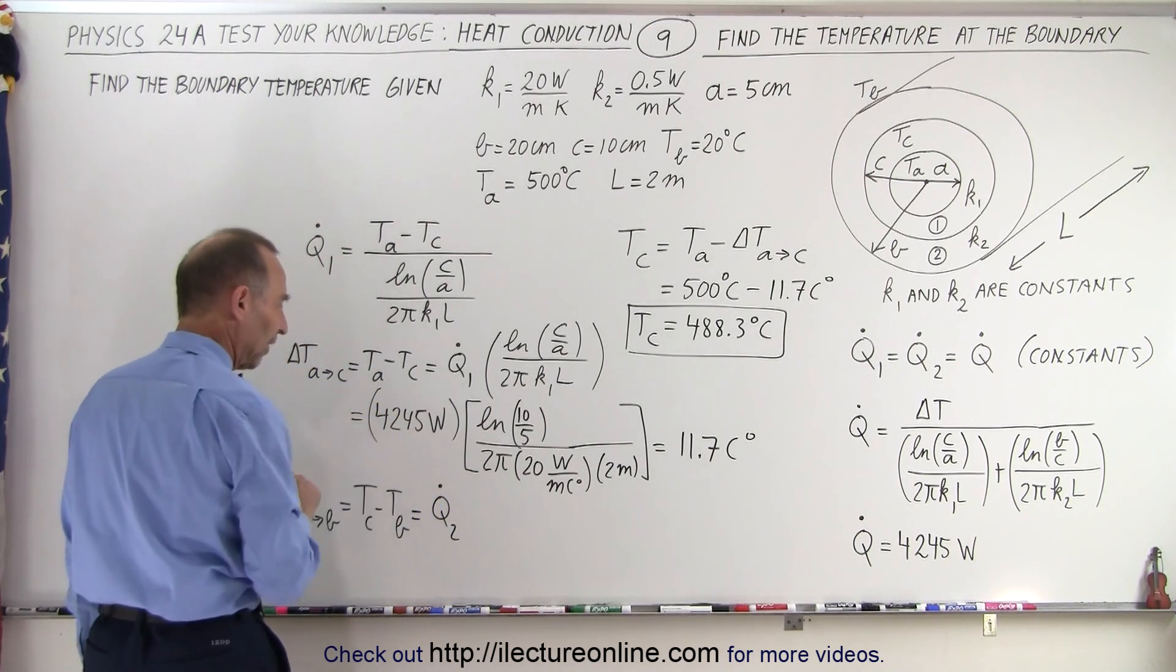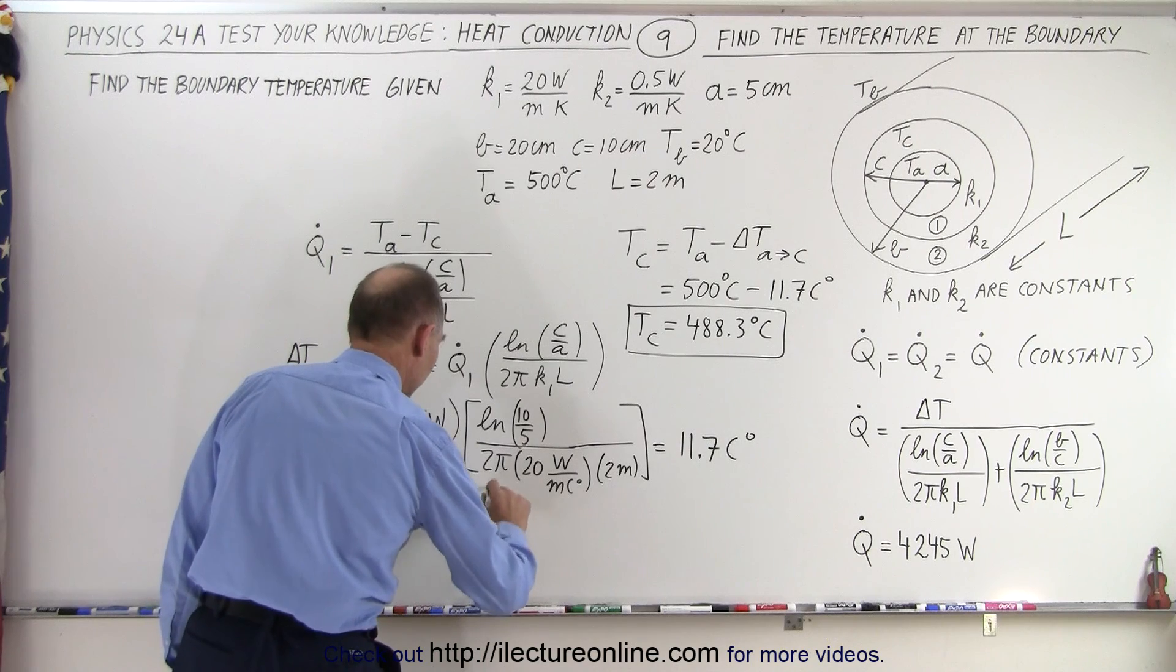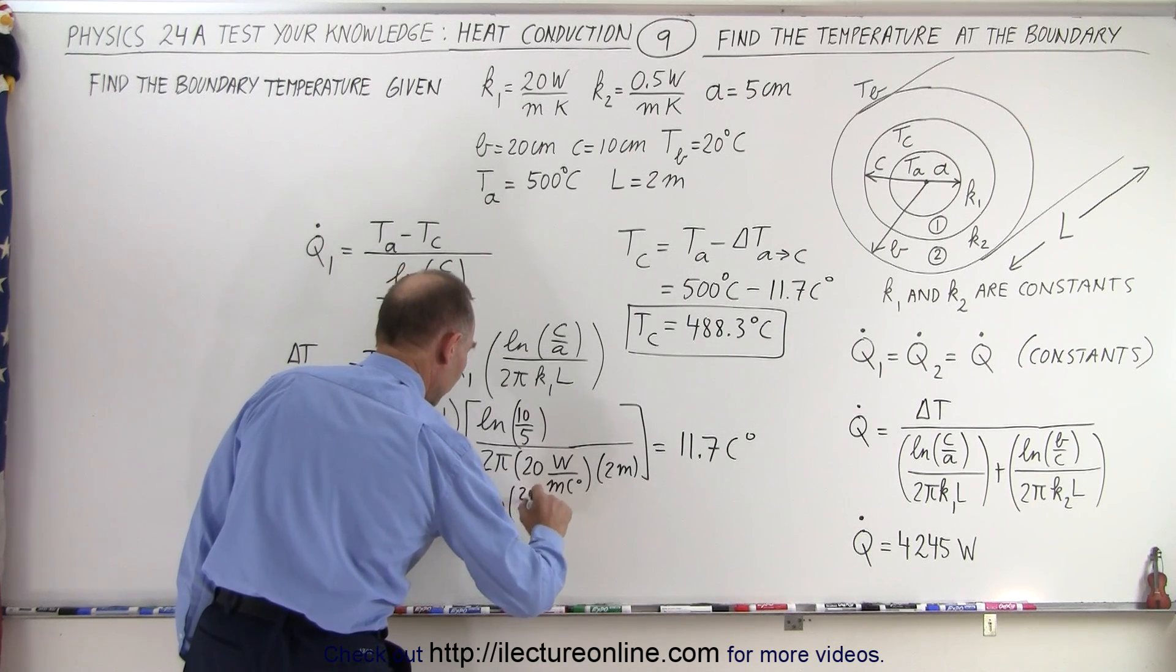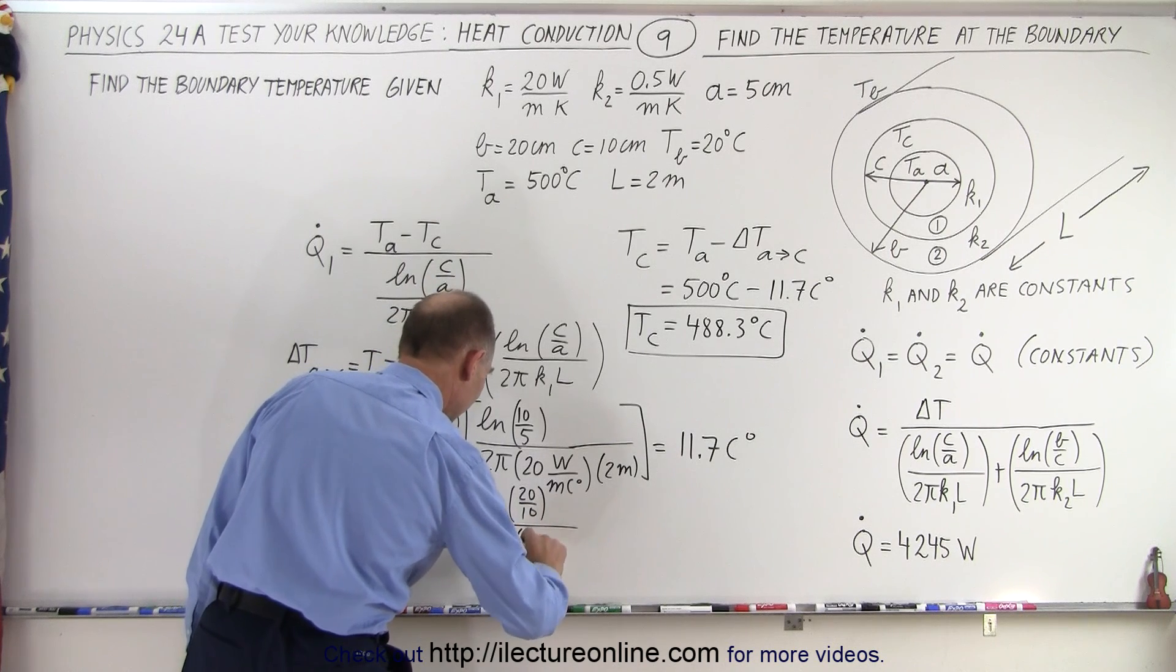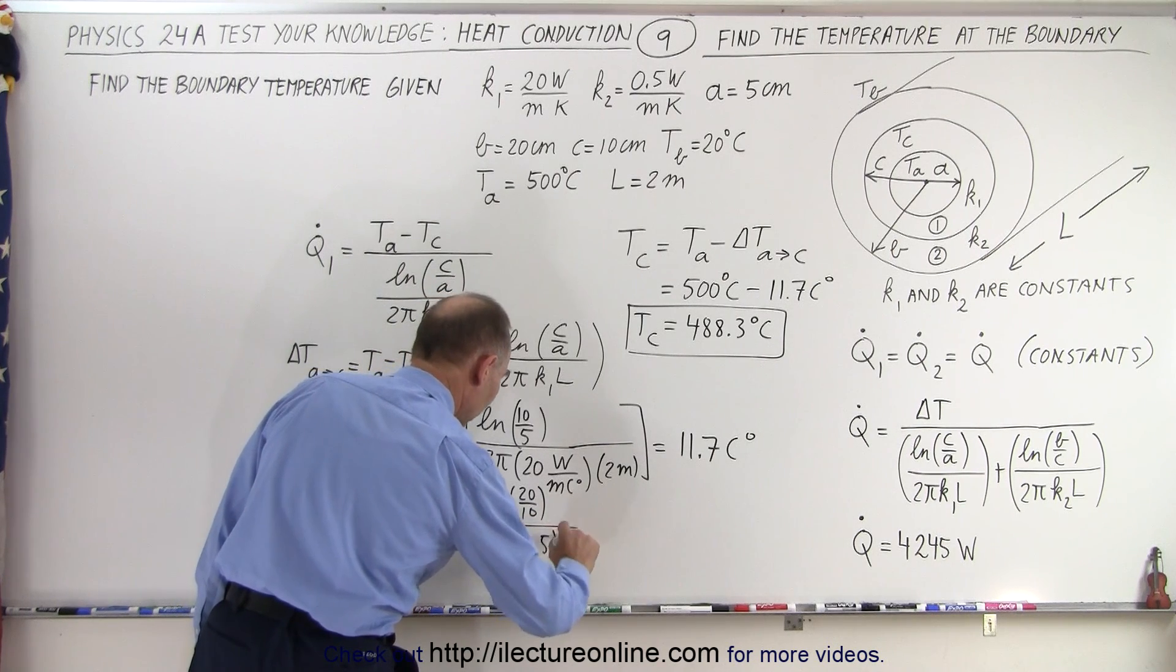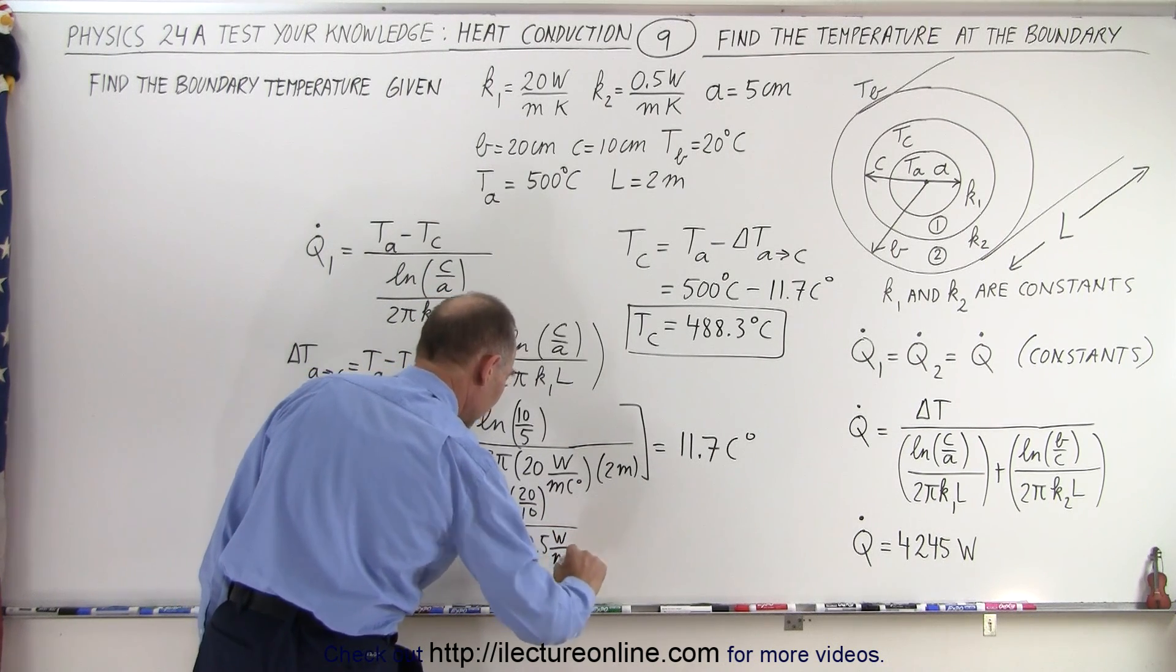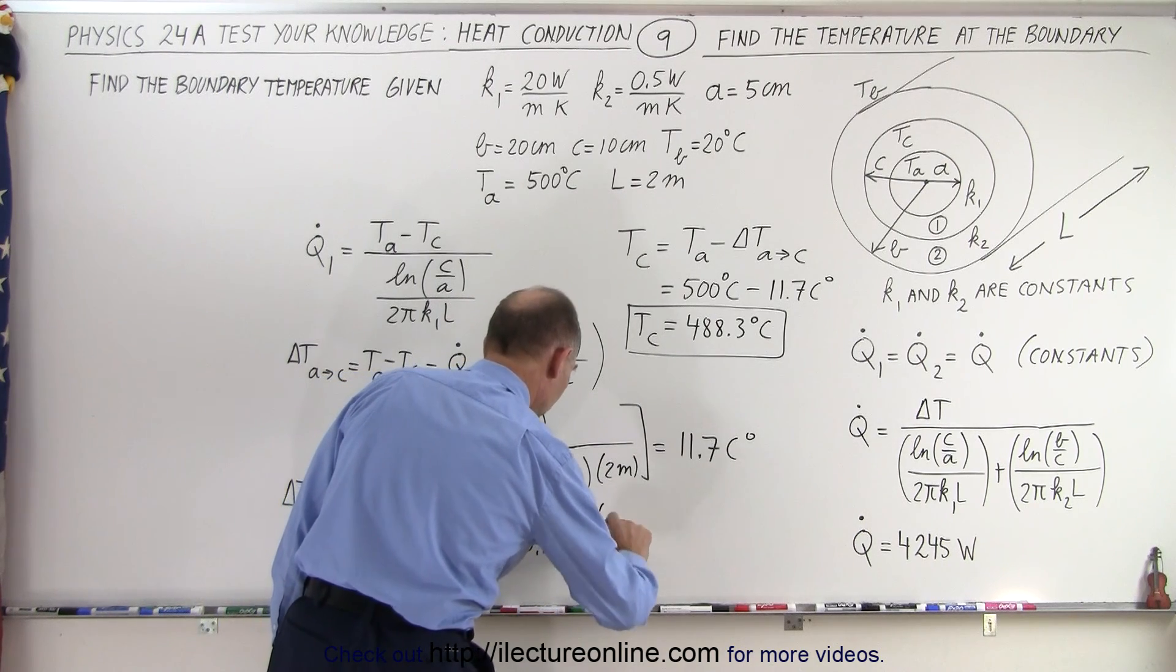Which is the same, 4245 watts, times the natural log of 20 over 10, divided by 2π, times 0.5 watts per meter centigrade degrees, times two meters.